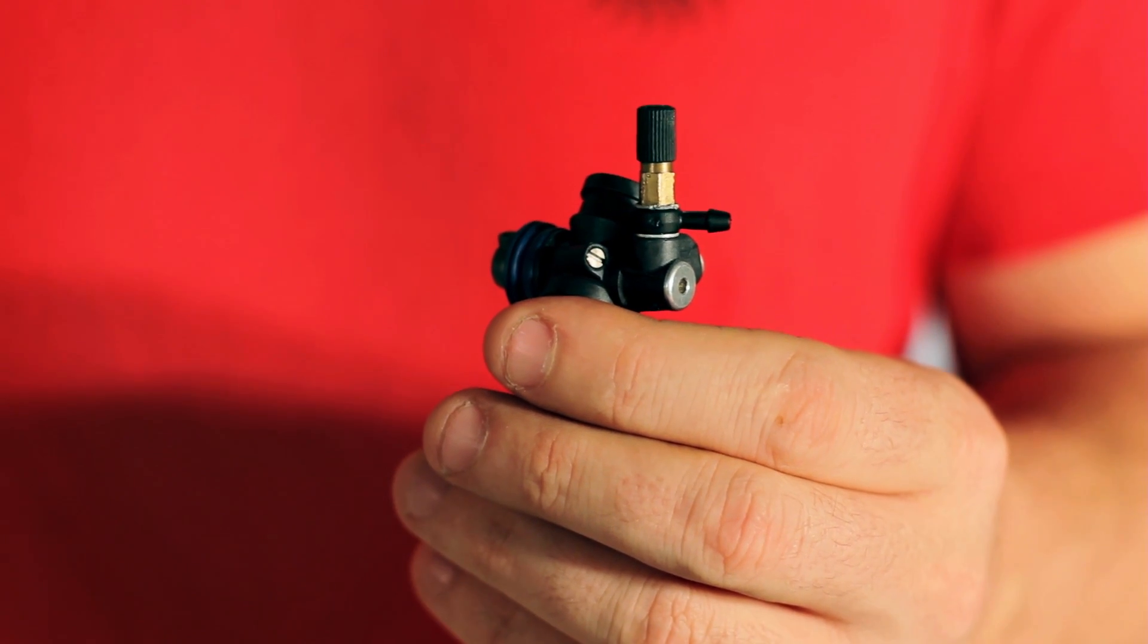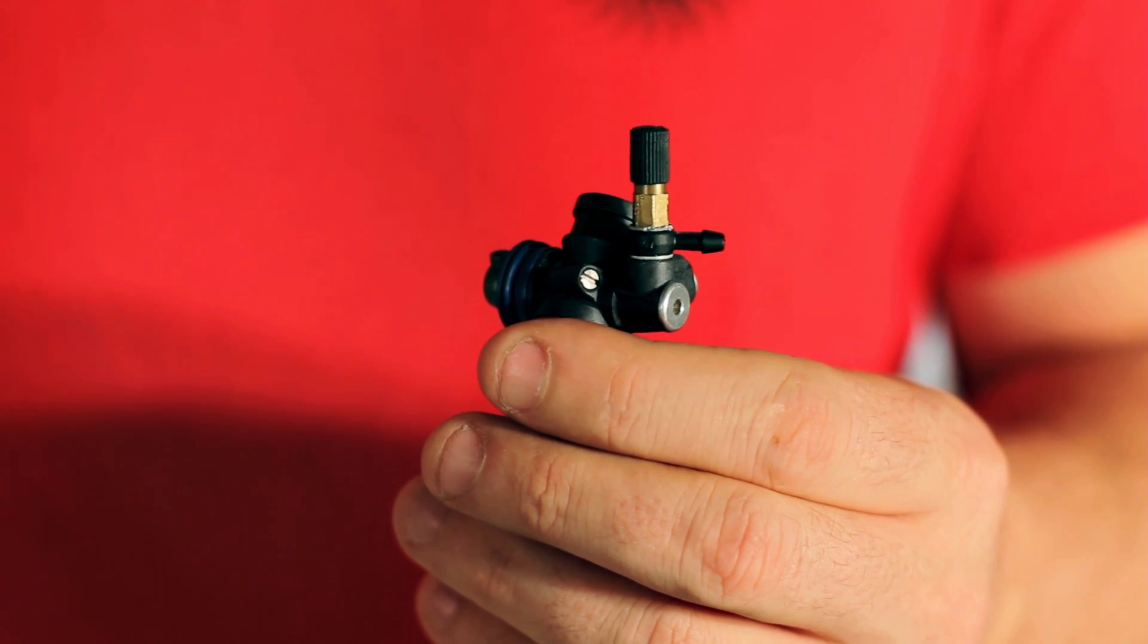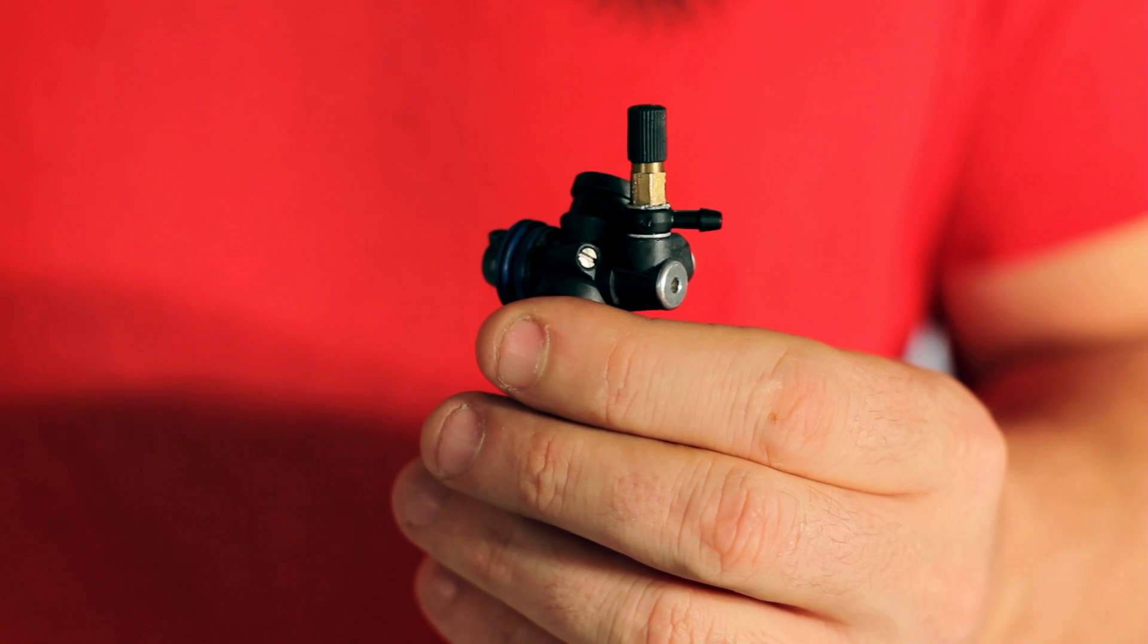Lastly, you might have to adjust your idle speed screw, and that's located right here on the carburetor body. That's going to set your idle speed RPM of the engine.